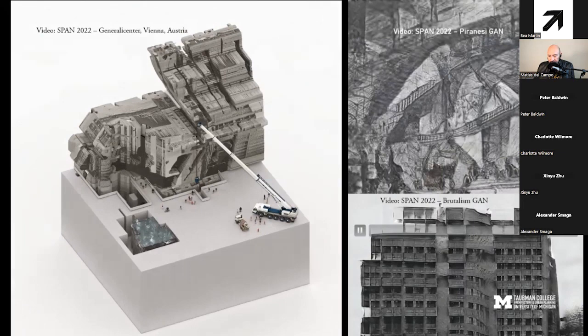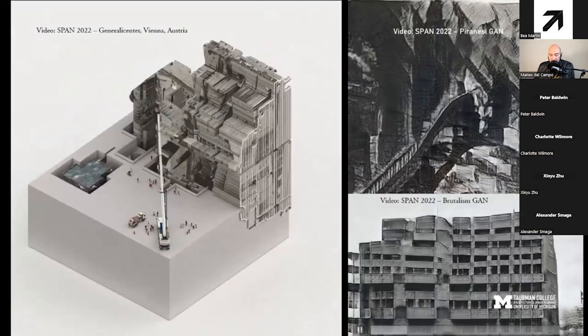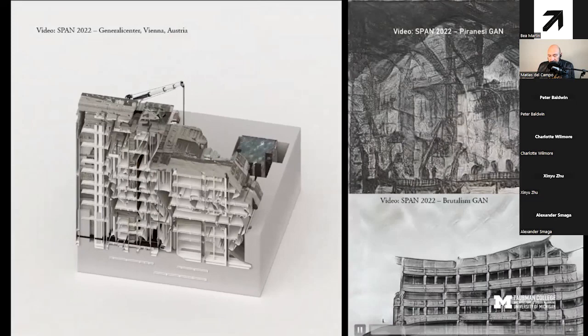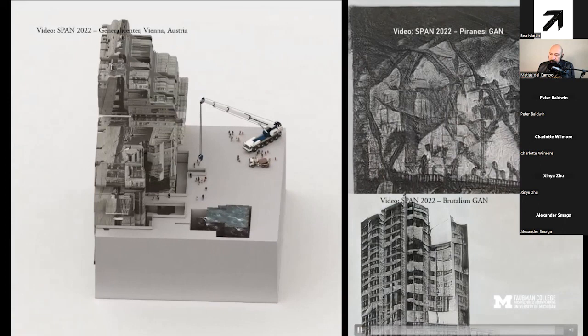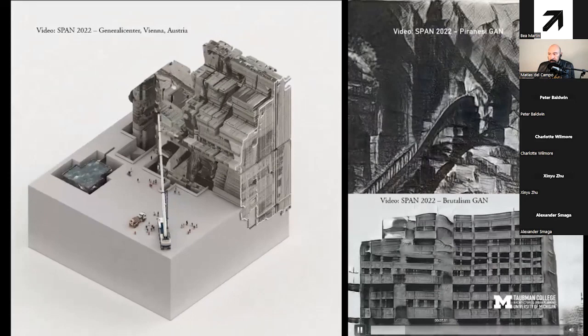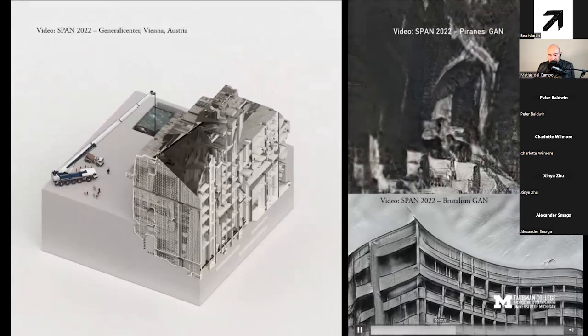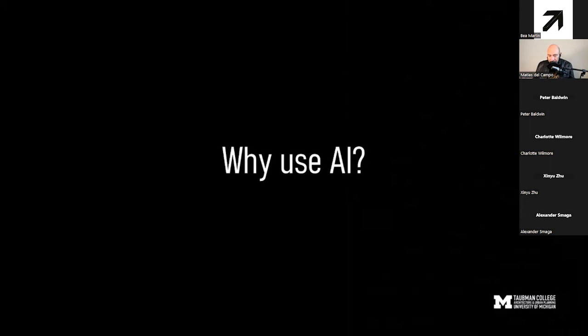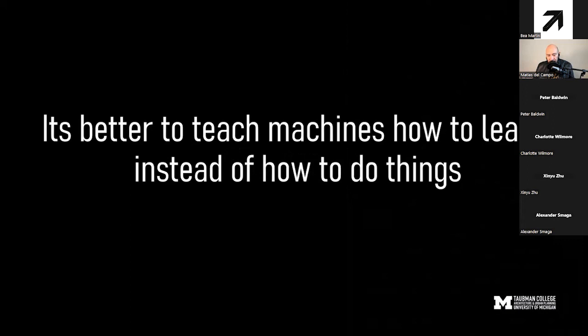Neural architecture is the field primarily preoccupied with interrogating the emerging field of artificial neural networks as a method of designing architecture. You can use AI for practical purposes — optimization of structure, material consumption, construction schedules — but you can also interrogate the unseen areas within the latent space that inform possibilities for architects. Before going deeper, let's ask a basic question: why use AI at all? The main simple answer is that it's better to teach machines how to learn instead of how to do things.